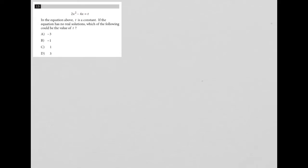This question starts off by giving us this equation here: 2x squared minus 4x equals t. I'm going to just rewrite that over here. Then the question goes on to say, in the equation above, t is a constant. If the equation has no real solutions, which of the following could be a value of t?